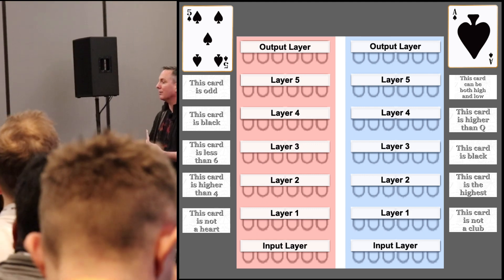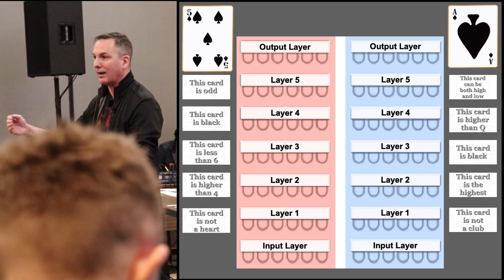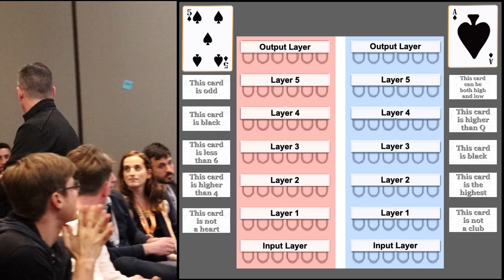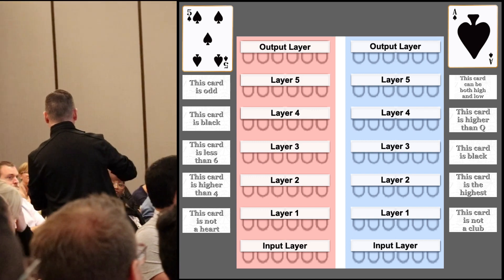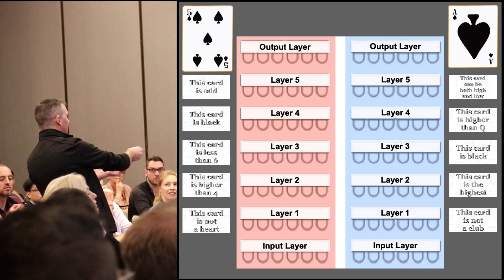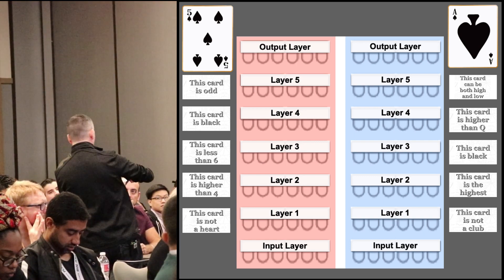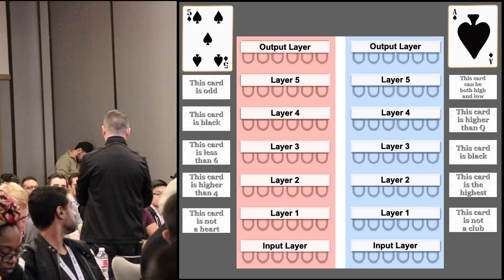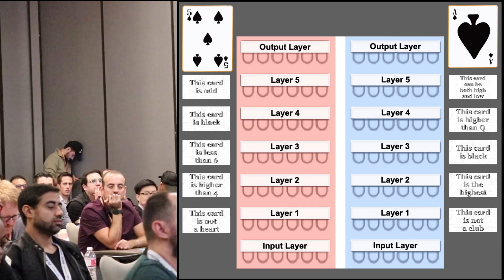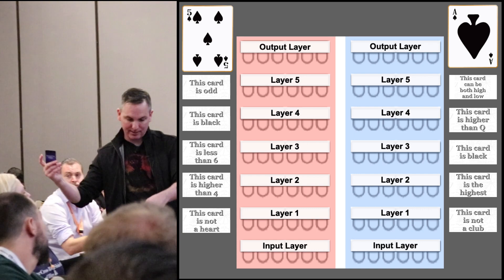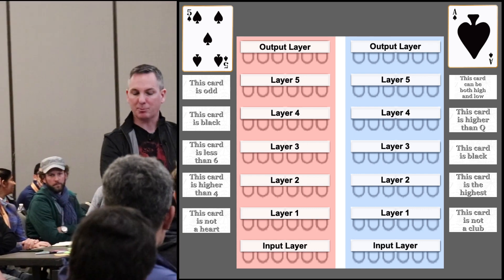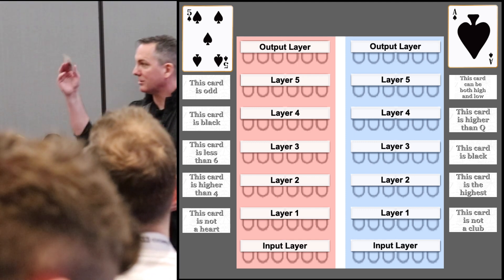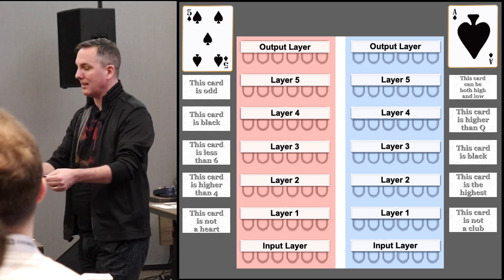When you train a neural net and run it the first few times, you might realize some rules aren't quite right — they're letting false positives slip through. For example: 'less than six,' 'this card is black,' 'this card is odd' — these aren't specific enough. A better rule might have been 'black and not a club' rather than 'black and not a heart,' which don't help much together. On the ace side, 'highest card' was a little ambiguous, which caused some issues. But overall, you guys did pretty well.